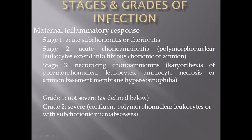In terms of staging and grading of the infection: staging refers to where the neutrophilic response is located. Stage 1 is when the inflammation resides below the chorionic membrane or up to one-third of the chorionic membrane. Stage 2 is when it fully involves the chorionic membrane and extends to the amniotic membranes as well. Stage 3 is when it fully involves both the chorionic and amniotic membranes, and there is karyorrhexis of the neutrophils.